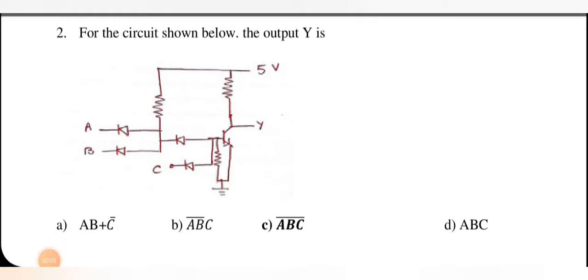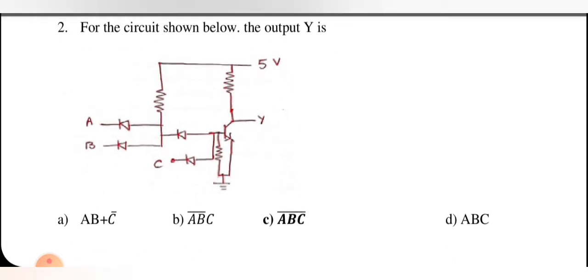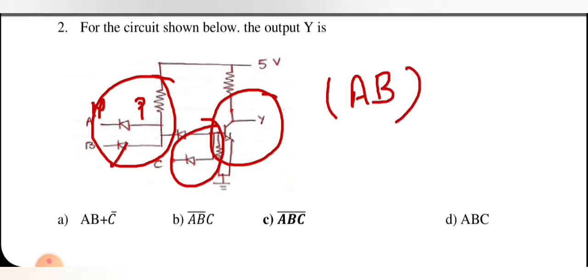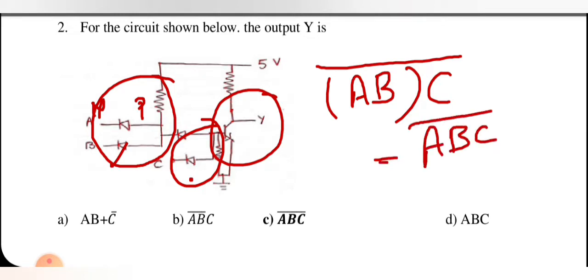Next question: for the circuit shown below, the output Y is — in this case if we have 0 applied on any diode, the respective diode will be forward biased. This is an AND gate forming with diodes, and this is also an AND gate. So the output is A dot B dot C, and this is applied at the base of the transistor which acts as an inverter. So we can write it as ABC bar. That is the right option.